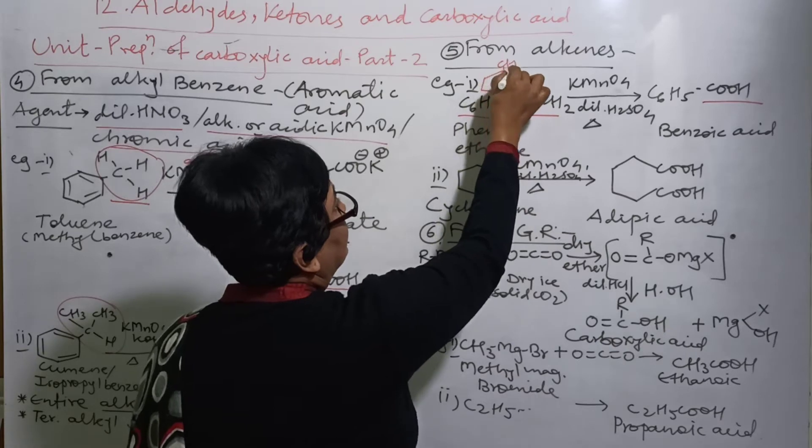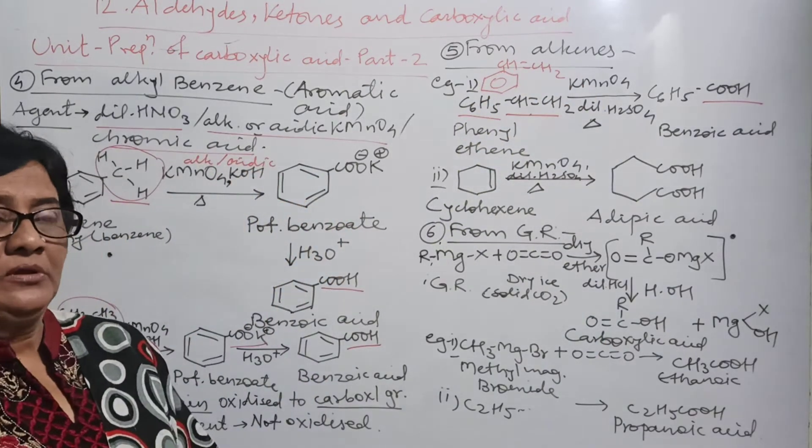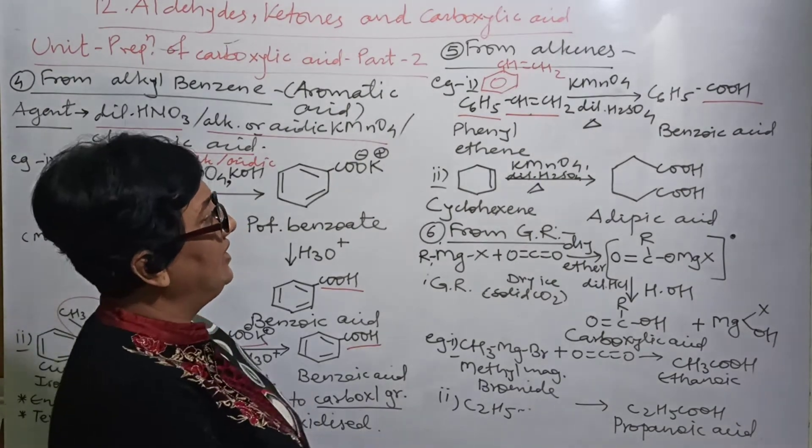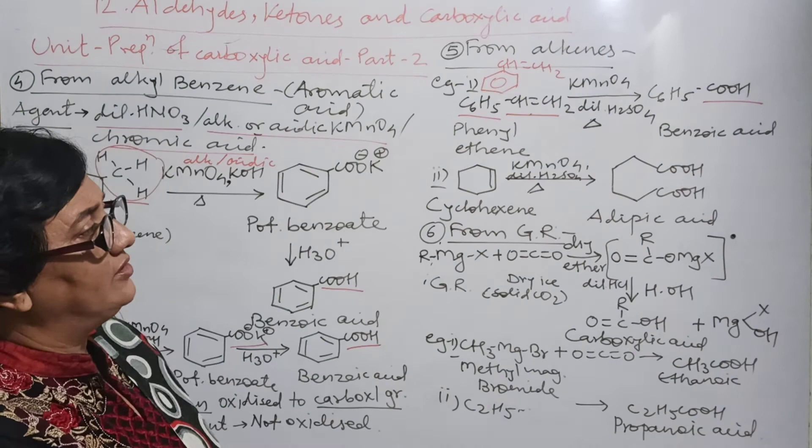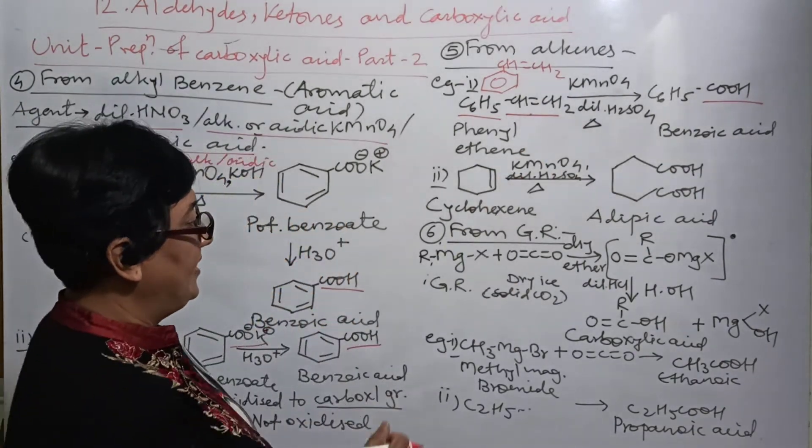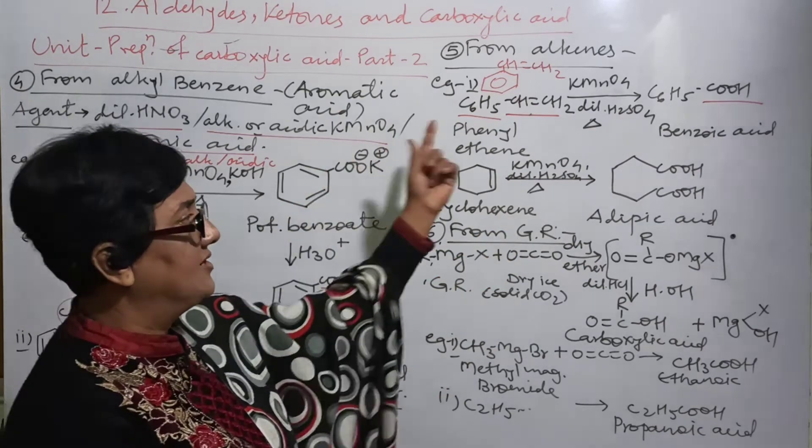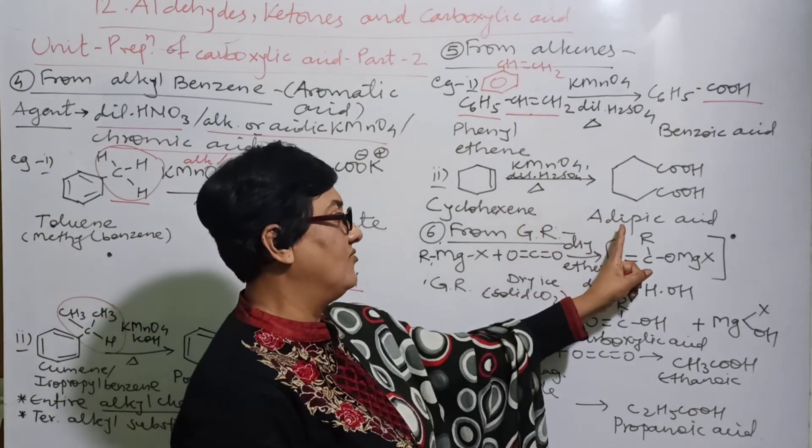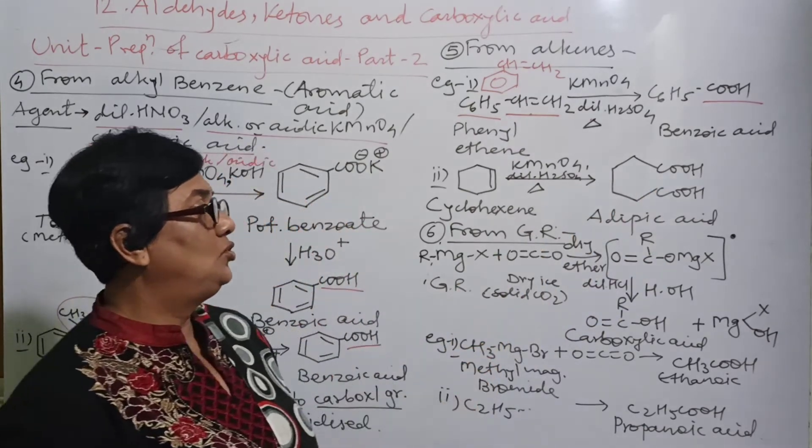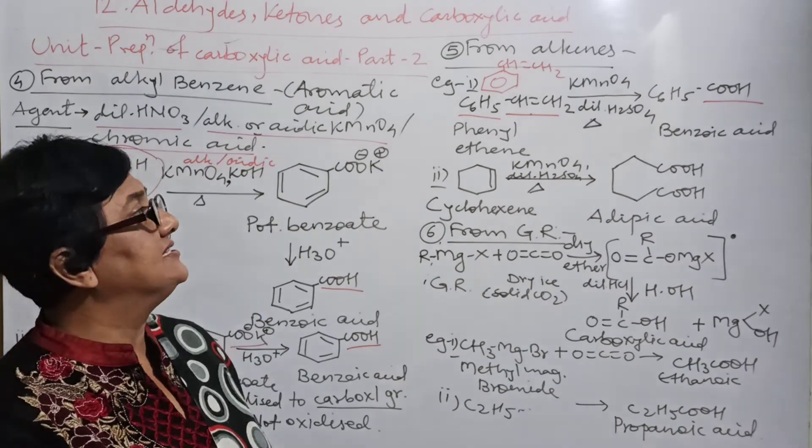Here CH double bond CH2, one and the same thing. C6H5 is written means the benzene ring. So phenylethyne can be converted into benzoic acid, a very simple reaction. Then second example: cyclohexene. If cyclohexene is given, again the same condition, it converts into adipic acid. Adipic acid is written like this - two COOH groups are there.